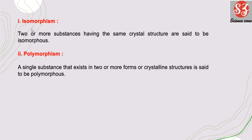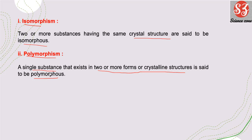So in solid state, the first important thing is Isomorphism and Polymorphism. Isomorphism means 2 or more substances which have the same crystal structure. And polymorphism means 1 single substance which exists in 2 or more crystalline forms.